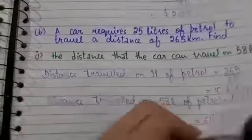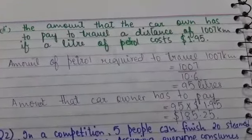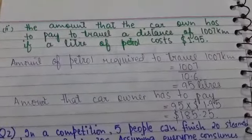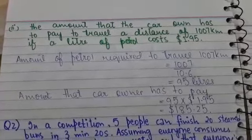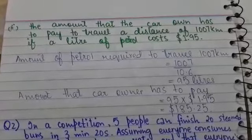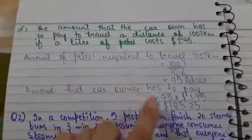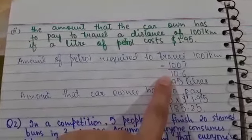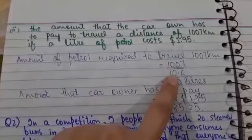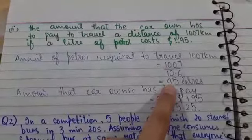Now moving towards the second part. Find the amount that the car owner has to pay to travel a distance of 1007 kilometers if a liter of petrol costs $1.95. Firstly, we will find the amount of petrol required to travel 1007 kilometers. For this, we divide 1007 by the distance traveled on 1 liter of petrol, which was 10.6 as we found earlier. So the answer is 95 liters.